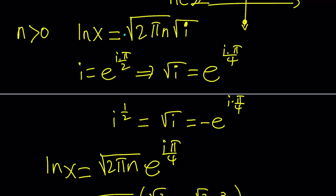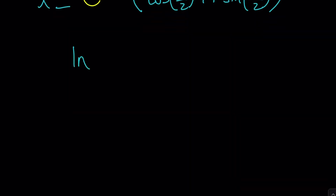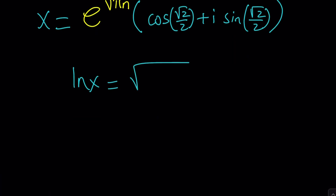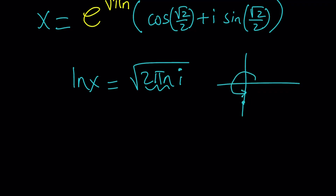When n is negative, that's a pretty interesting case. Going back to the original equation, you have the square root of 2πni. A negative multiple of i needs to be written in polar form, and in that case the angle you use is 3π/2. When you take the square root — cutting the angle in half — it becomes 3π/4, giving yet another distinct set of solution values.